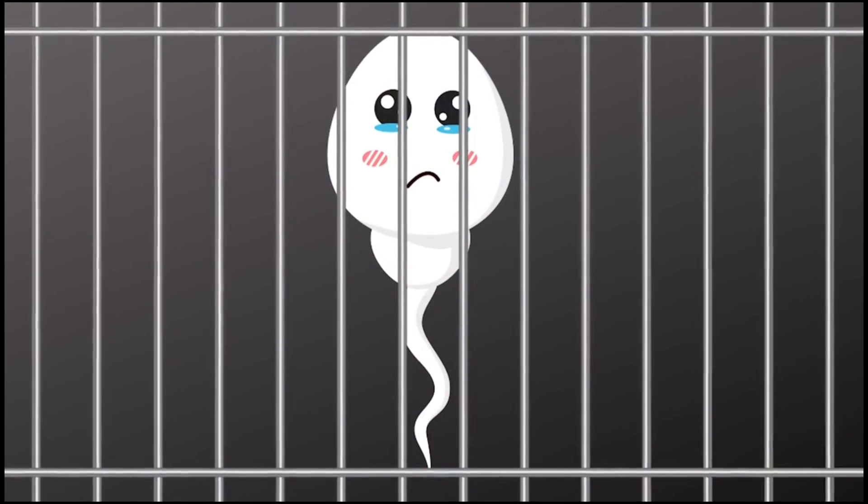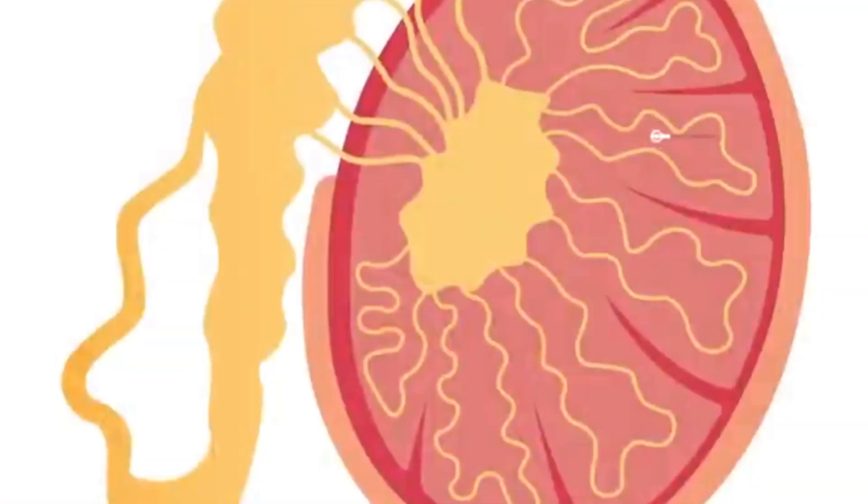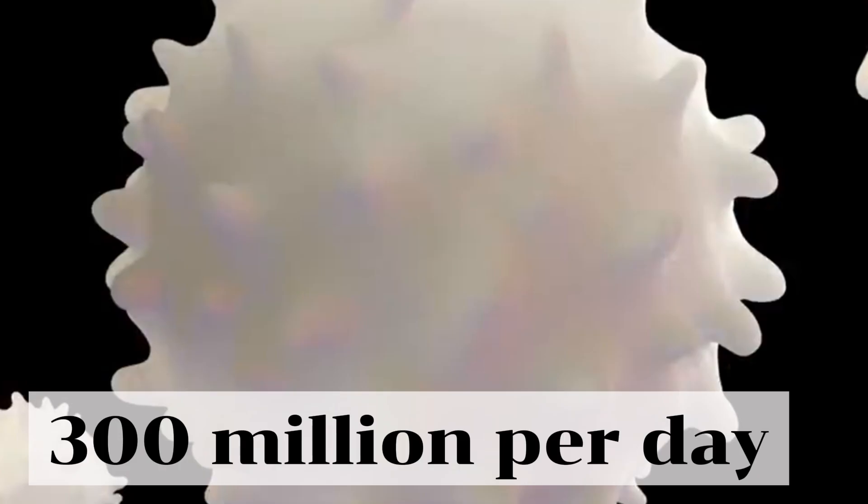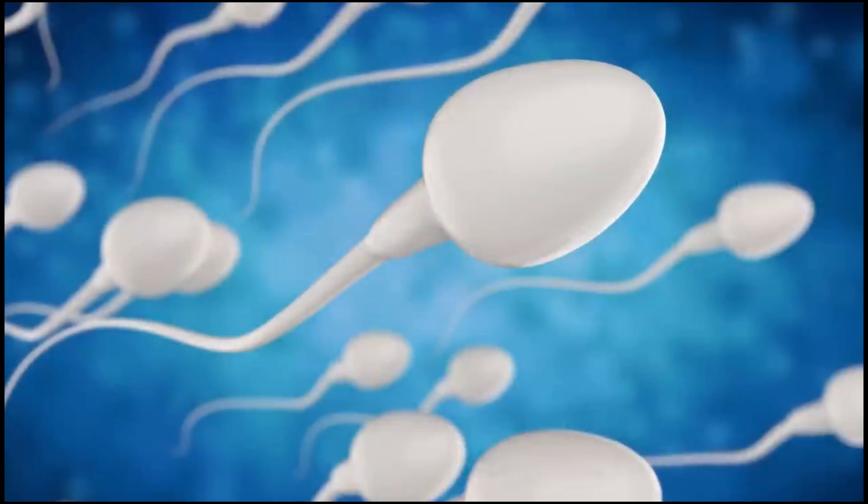Sperm cells are produced in tiny tubes in each testis called seminiferous tubules. Here's a right testis, or a testicle, and if you open it up, you can see these string-like seminiferous tubules. And again, if you average out 300 million per day, that is nearly 3,500 sperm cells being produced per second.